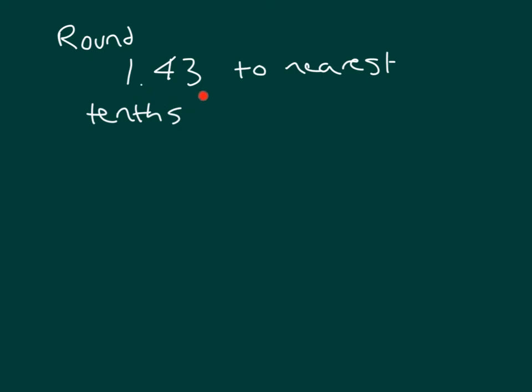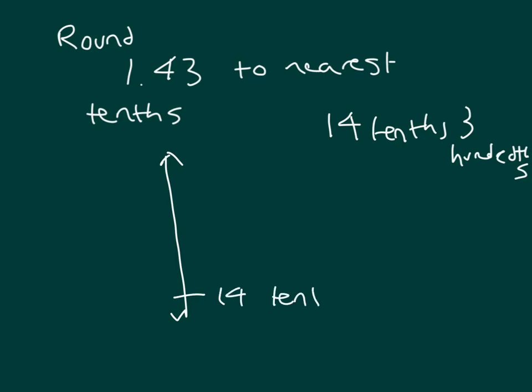Here I have 1 and 43 hundredths, and I'm being asked to round it to the nearest tenths place. Naming it, I have 14 tenths along with three hundredths. This will help me make that vertical number line where I take the 14 tenths, and then adding 1 tenth to that, it's 15 tenths. And then halfway in between is 14 tenths along with five hundredths.